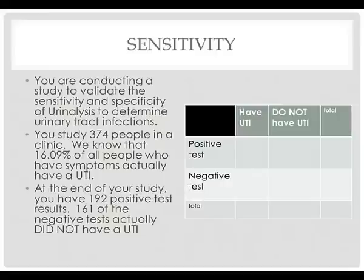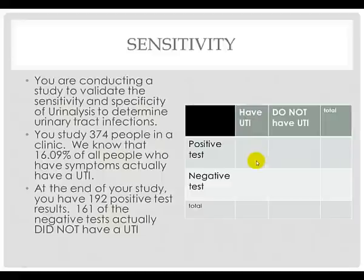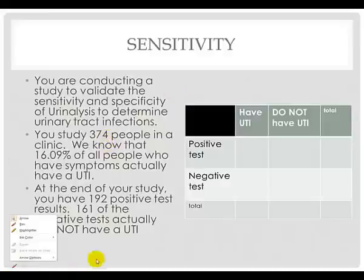Sensitivity and specificity work in tandem to help us describe the accuracy of the test. Sensitivity is the test's ability to deal with positive test results. When we're calculating sensitivity, we are identifying people who have the disease, and out of all the people who have the disease, the number who have a positive test. In our example, we're conducting a study to validate sensitivity and specificity of urinalysis in identifying urinary tract infections.